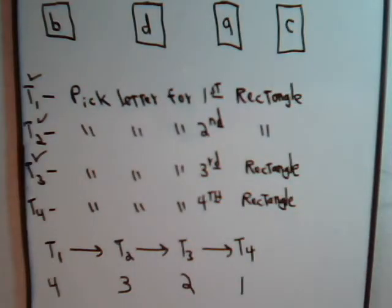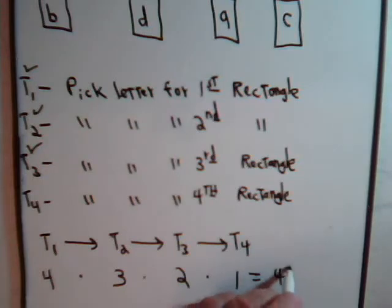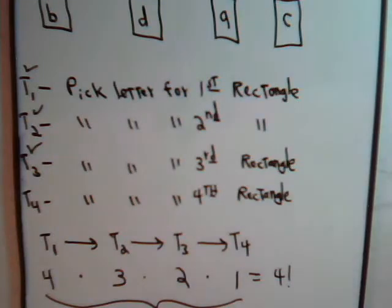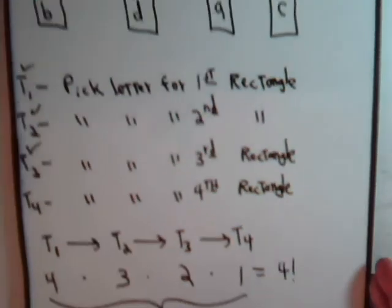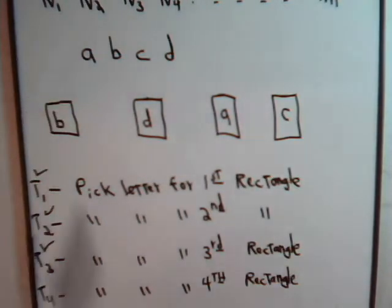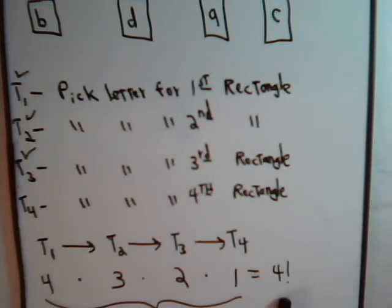Now the fundamental counting principle tells us that the total number of ways that we can perform these tasks is 4 times 3 times 2 times 1, which is 4 factorial. Which of course equals, you can see from here, that equals 24. So the total number of ways that we can arrange these letters into different arrangements where the order in the arrangement matters is 24. And we're using here now the expression, which you've probably seen many times before, 4 factorial.